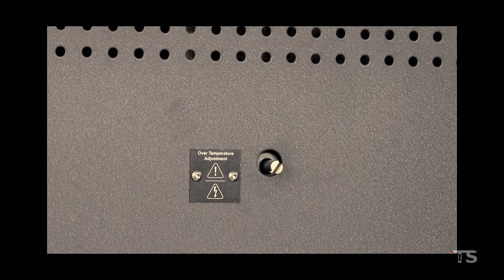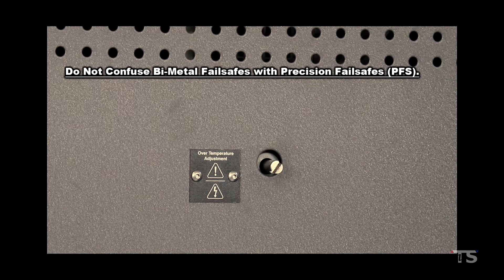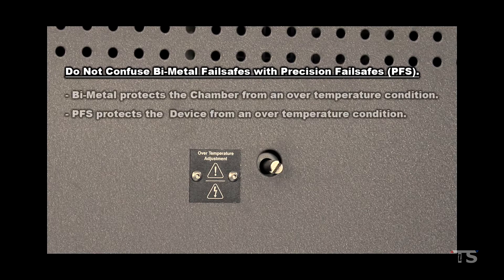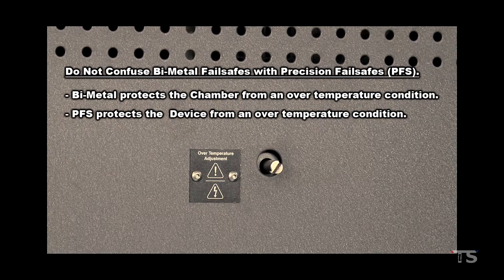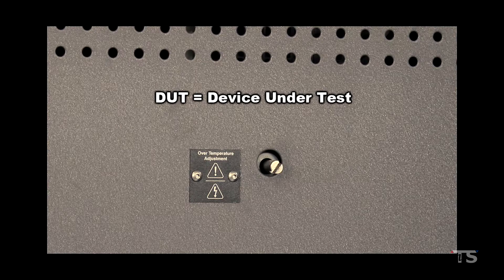The bi-metal fail safe's purpose is to protect the chamber from an over-temperature condition. Chambers can also be equipped with additional independent fail safes called precision fail safes, or PFSs, which should not be confused with the bi-metal fail safe. Bi-metal fail safes are designed to protect the chamber from an over-temperature condition, while precision fail safes are designed to protect the device being tested — which we call the device under test, or DUT — from an over-temperature condition.